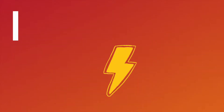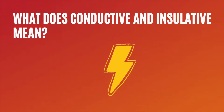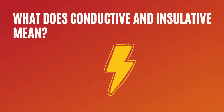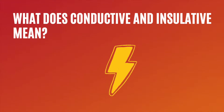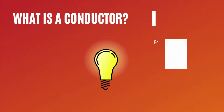What does conductive and insulative mean? Something that is conductive allows the free flow of electrons from atom to atom. Something that is insulative resists the transference of electrons from one atom to another.